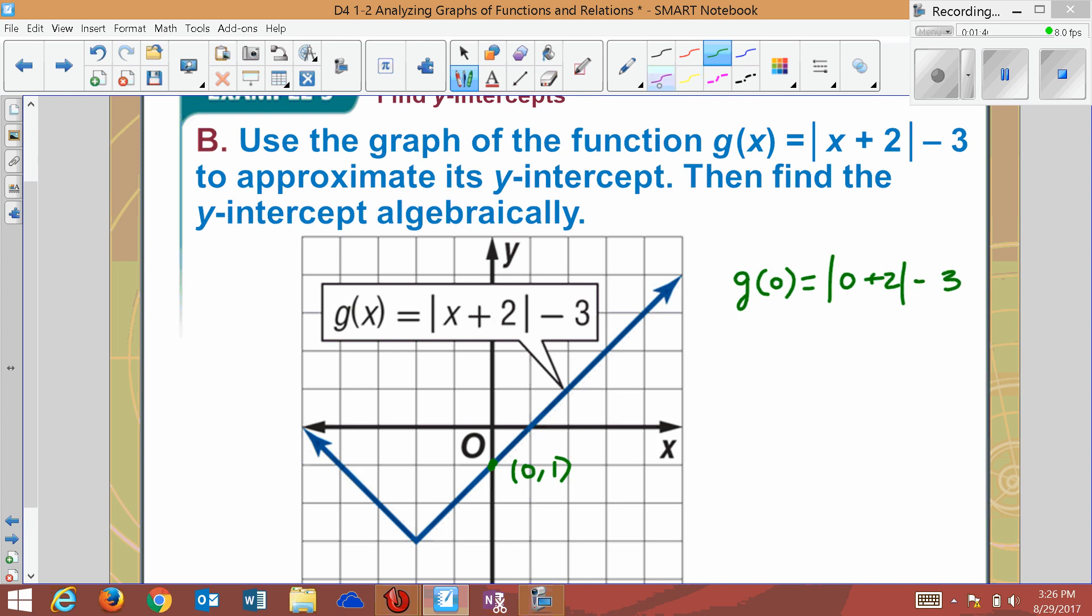As I go through to solve this, I would get that I have 0 plus 2 is the absolute value of 2 minus 3. The absolute value of 2 just means make it positive. It's like distance. So that since it's already positive, it just stays, and it's just 2 minus 3, which 2 minus 3 is negative 1. So that is my y-intercept there.